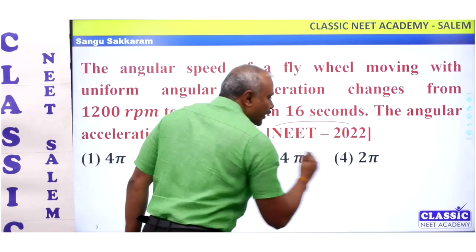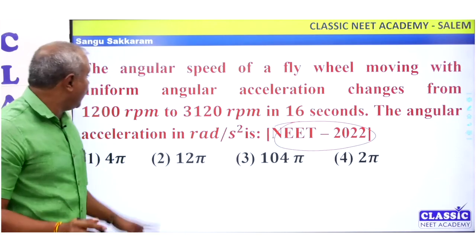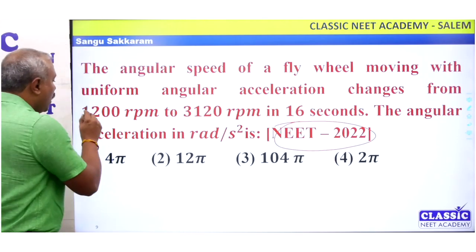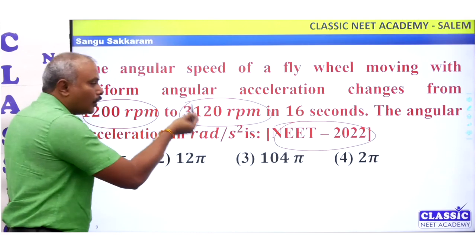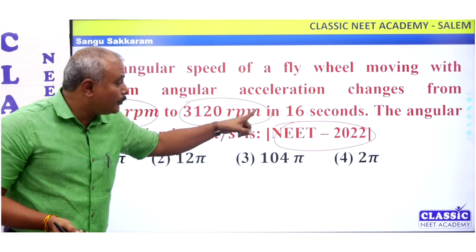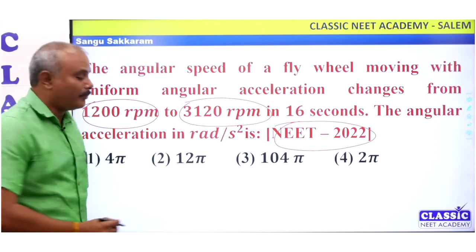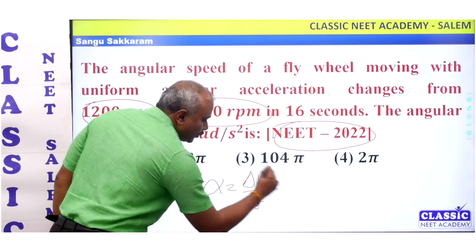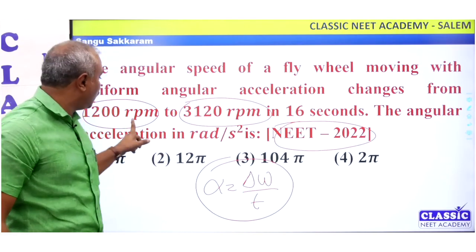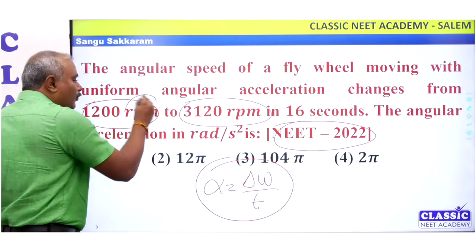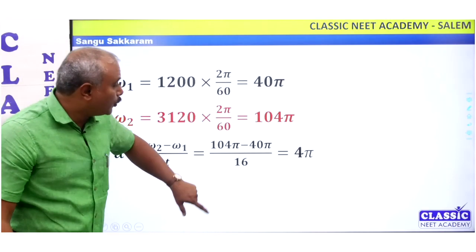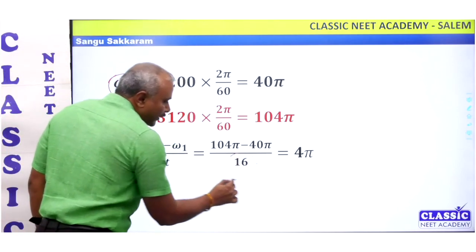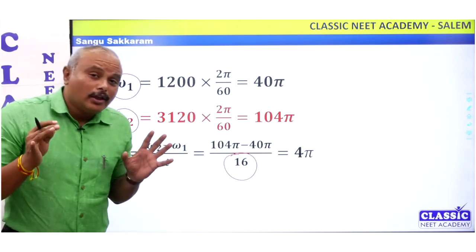You have a question in 2022: the angular speed of a flywheel moving with uniform angular acceleration changes from 12,000 rpm to 3,120 rpm in 16 seconds. Angular acceleration equals change in angular velocity divided by time. To convert rpm to radians per second, we multiply by 2 pi by 60. It's very easy to calculate.